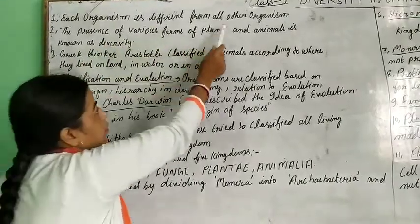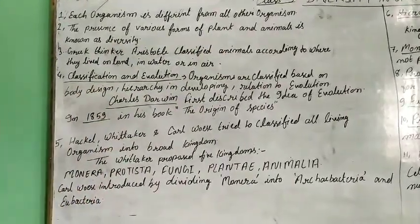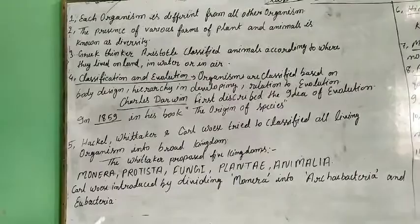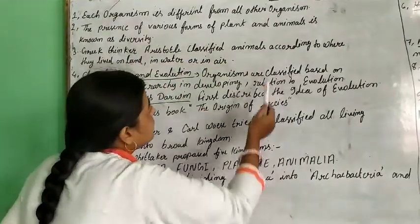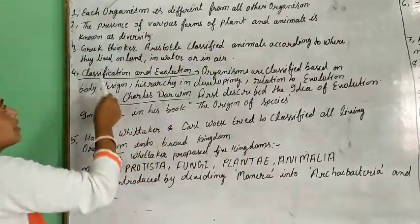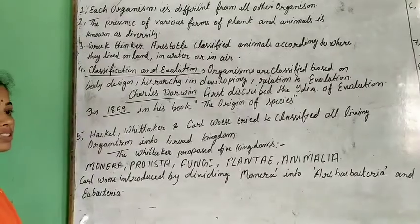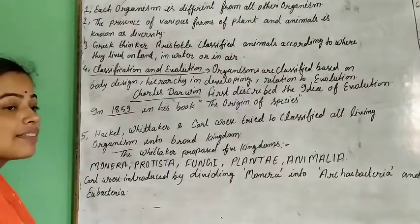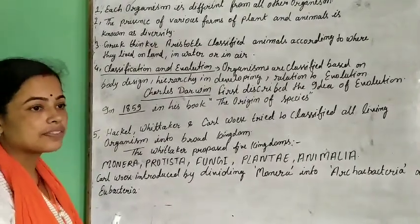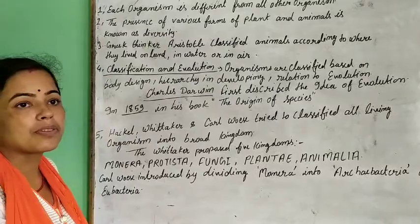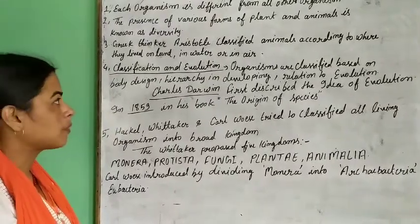Each organism is different from all other organisms. The presence of various forms of plants and animals is known as diversity. Organisms grow up in different types of environments and show different types of performance.